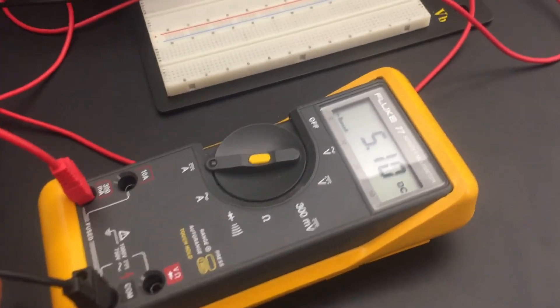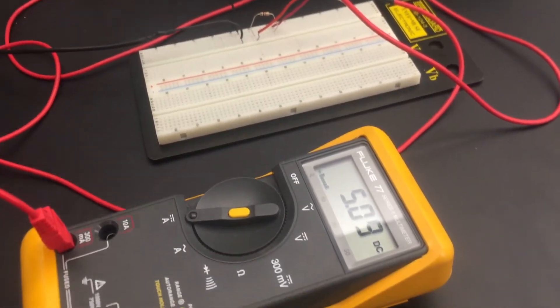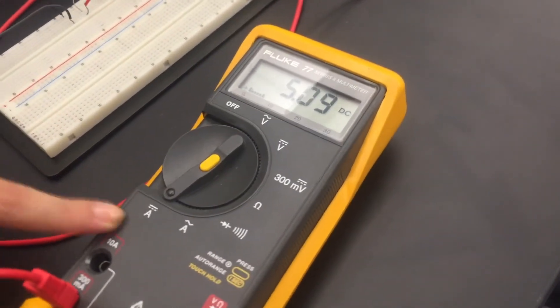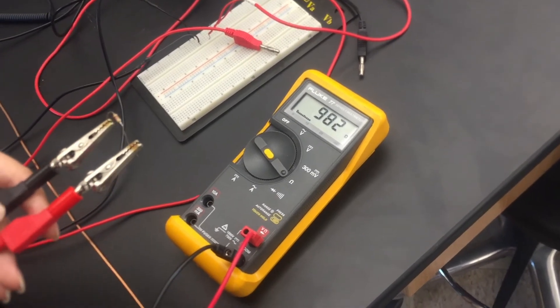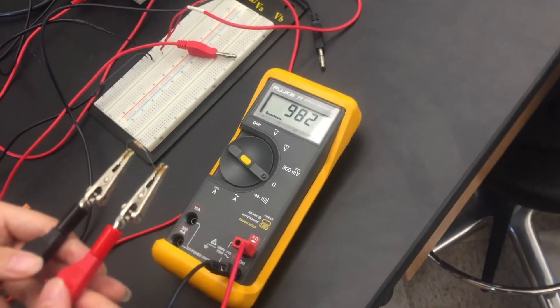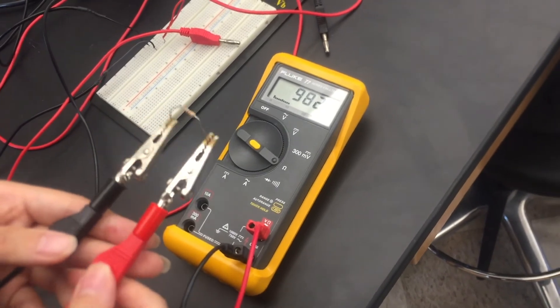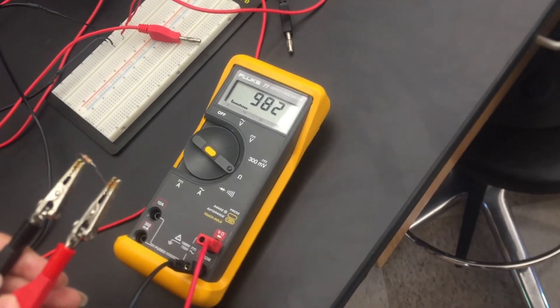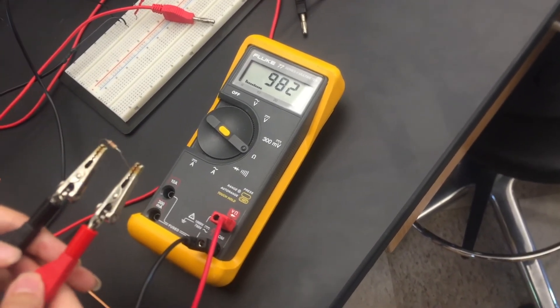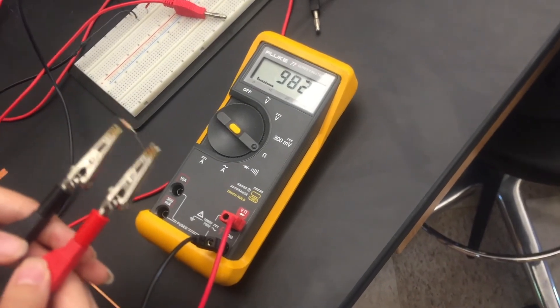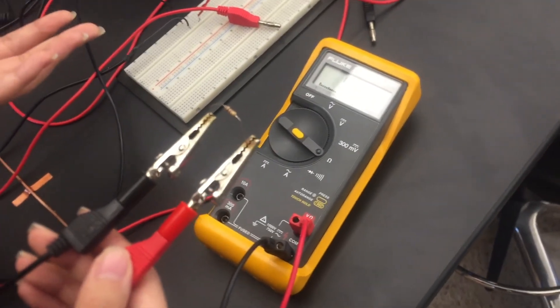So reading the resistance of a resistor is really simple. All you have to do is connect the two ends to the two ends of the resistor. And as you can see, the multimeter is reading 982 ohms for this resistor, which is supposed to be about one kilo ohm.